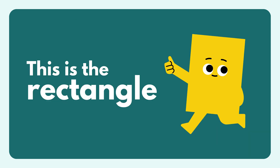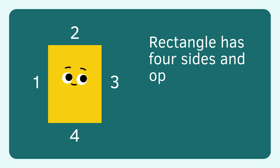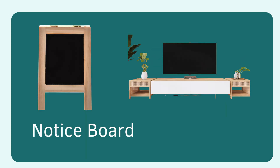Rectangle. Rectangle has four sides and opposite sides have equal lengths. Examples include a notice board and a television.